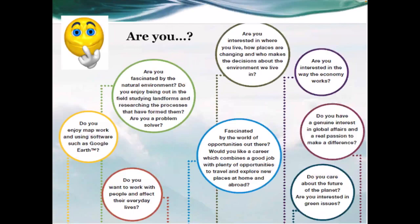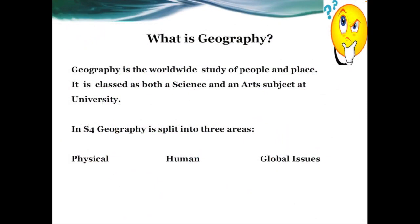Hello, I'm going to take you through the S4 Geography course at Holyrood Secondary. This first slide indicates the type of young people who we believe would find this course interesting and enjoyable. It's not just maps, rather looking to understand both the physical world and the interactions between people all across the planet. Geography has three broad areas of study in S4: physical, human and global issues.